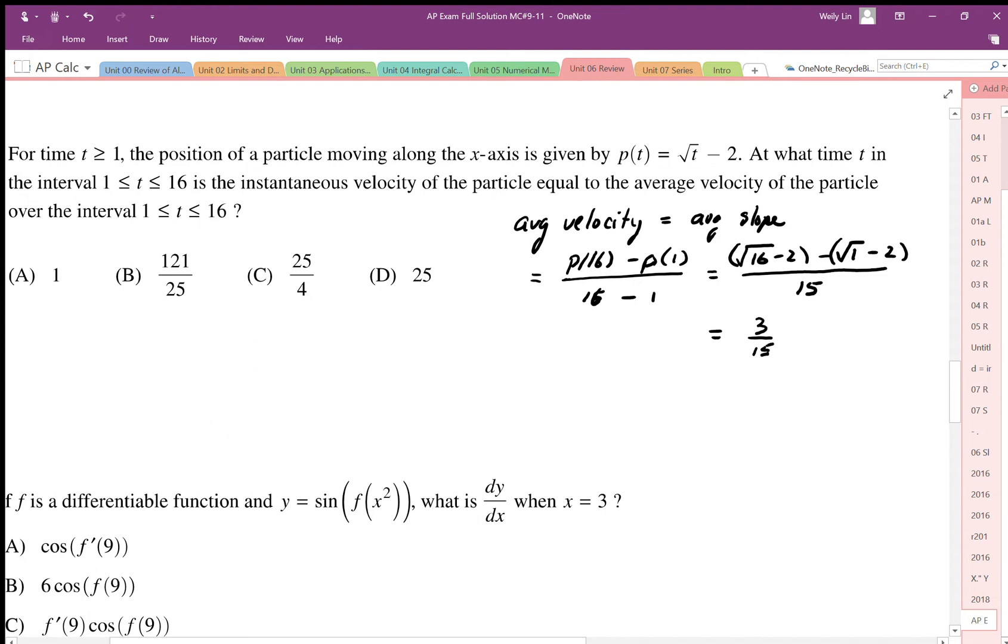That is my average slope, my average velocity. Now I want to know when the instantaneous velocity is equal to that. Well, for instantaneous velocity I need a derivative. So there's my derivative function. I need to make that derivative equal to my average slope and then solve for the time at which this happens.